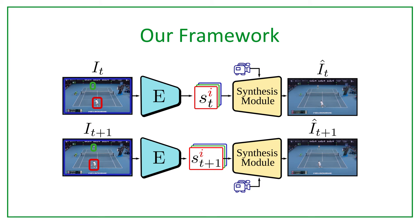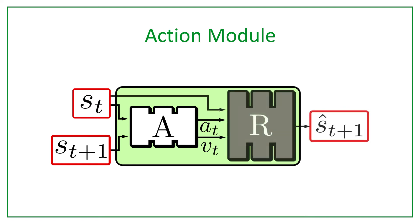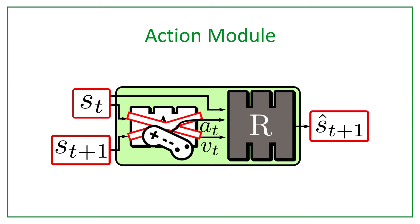Once the first stage of the pipeline is trained, in the second stage we train the action module. The action module learns to model state dynamics by reconstructing sequences of states conditioned on a set of learned actions. Specifically, given two successive environment states, an action network infers a discrete action representation and a recurrent network model using an LSTM is trained to reconstruct the environment state. At inference time, the action network is removed and actions are directly provided by the user.